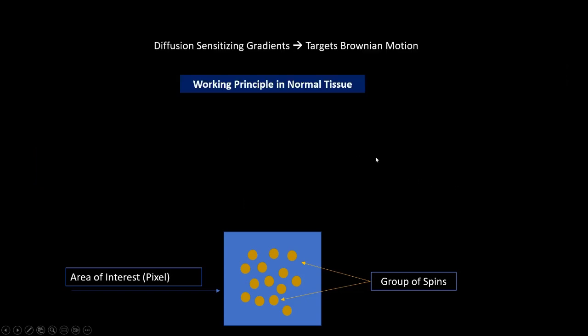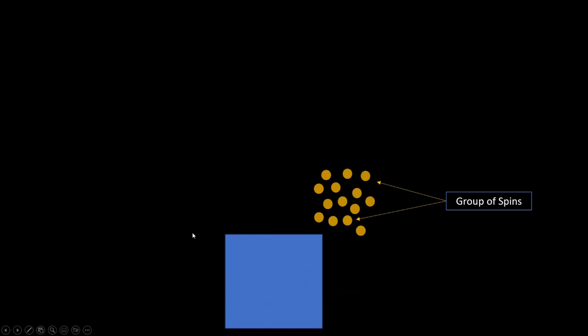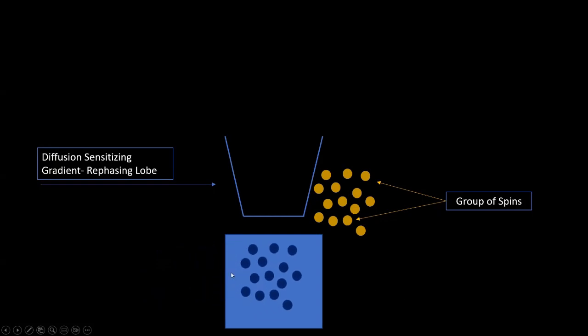What will happen if we do the same experiment to the normal brain? Let's see that as well. Again, same pixel. There are a group of spins which are moving due to Brownian motion because this is a healthy tissue, right? We will apply the first diffusion gradient so that this gradient will dephase the spins. Next, I'm applying the second diffusion gradient. Look at this. These spins are gone out of the pixel. Now, a new group of spins came into the pixel, the blue ones, which are not dephased by the first gradient.